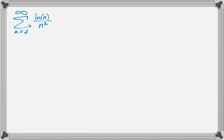So this is what we're dealing with. And what you do is you associate a function with it, and the function is really just the nth term, except you replace n with x. So the function we're going to deal with here is f of x, which is the natural log of x over x squared.